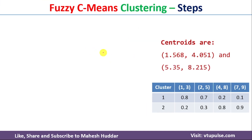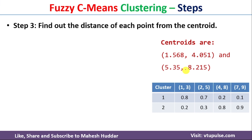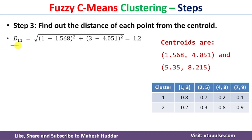Once you calculate the centroids, the next step is to calculate the distance between the data points and these centroids. To calculate the distance, you can use any distance metric. In this case, I am going to use the Euclidean distance formula: distance equals square root of (x2 minus x1)² plus (y2 minus y1)². For the first data point (1,3) to the first centroid (1.568, 4.051), the distance d11 equals square root of (1−1.568)² plus (3−4.051)², which gives 1.2.